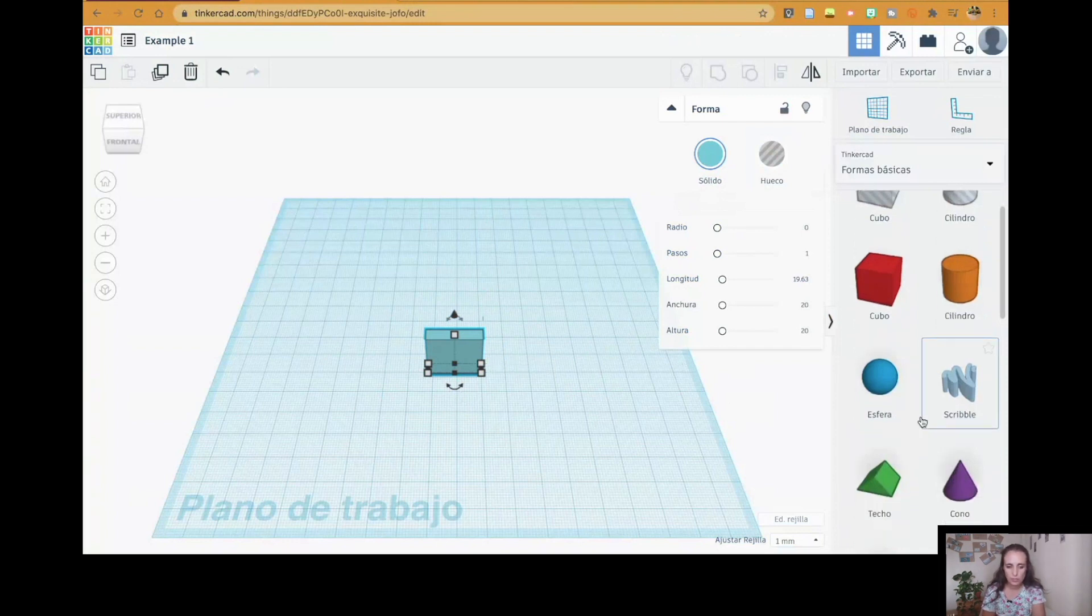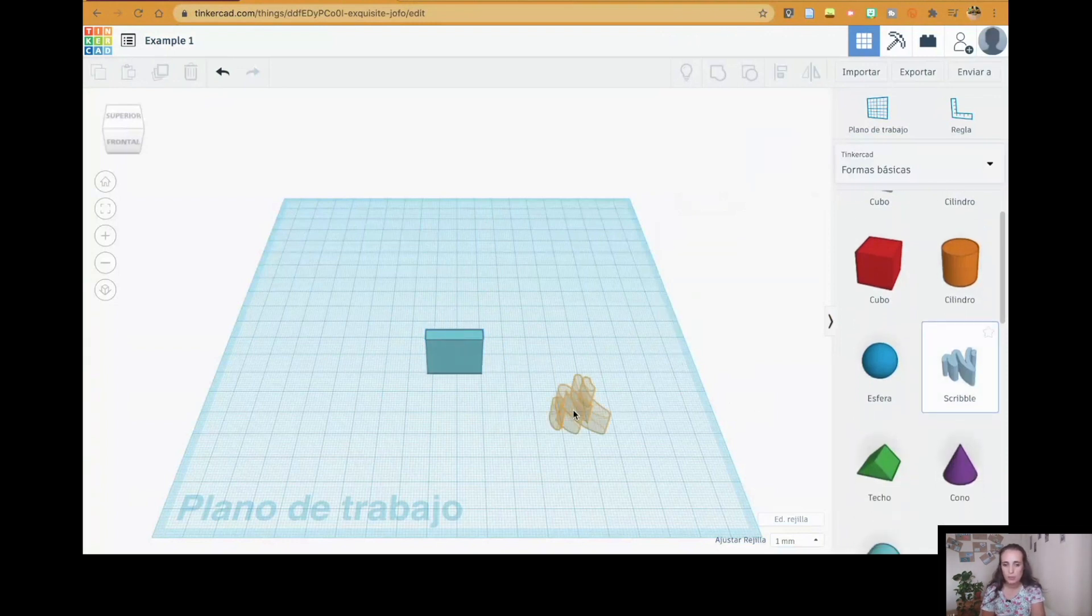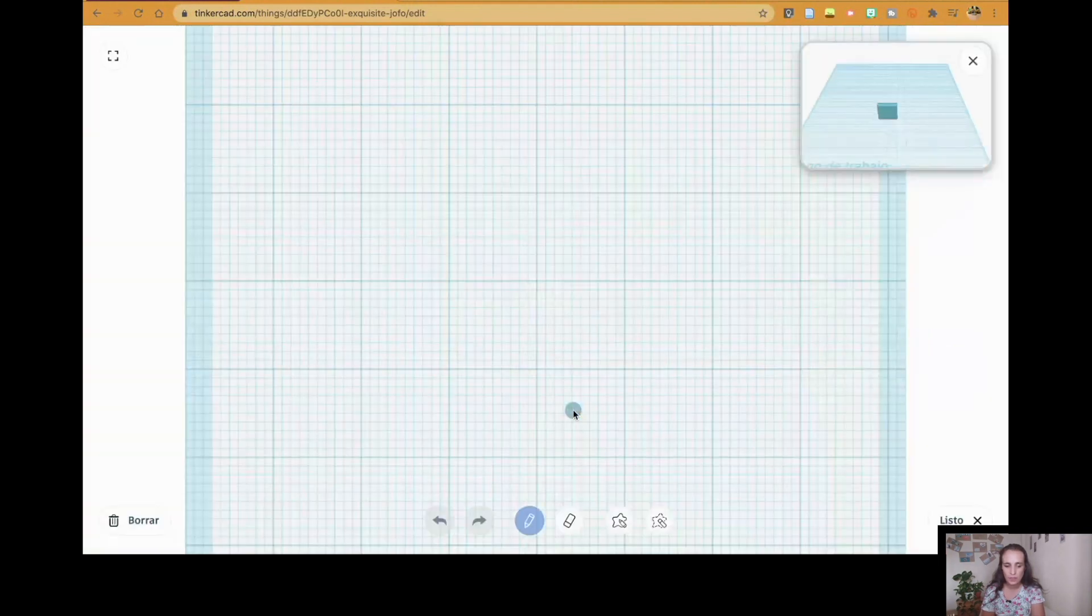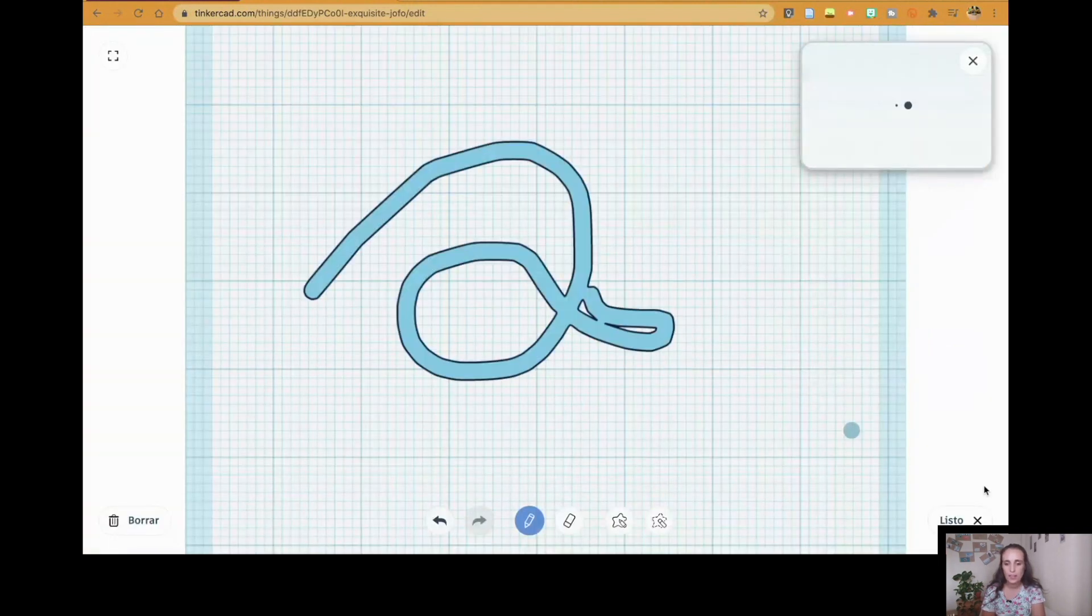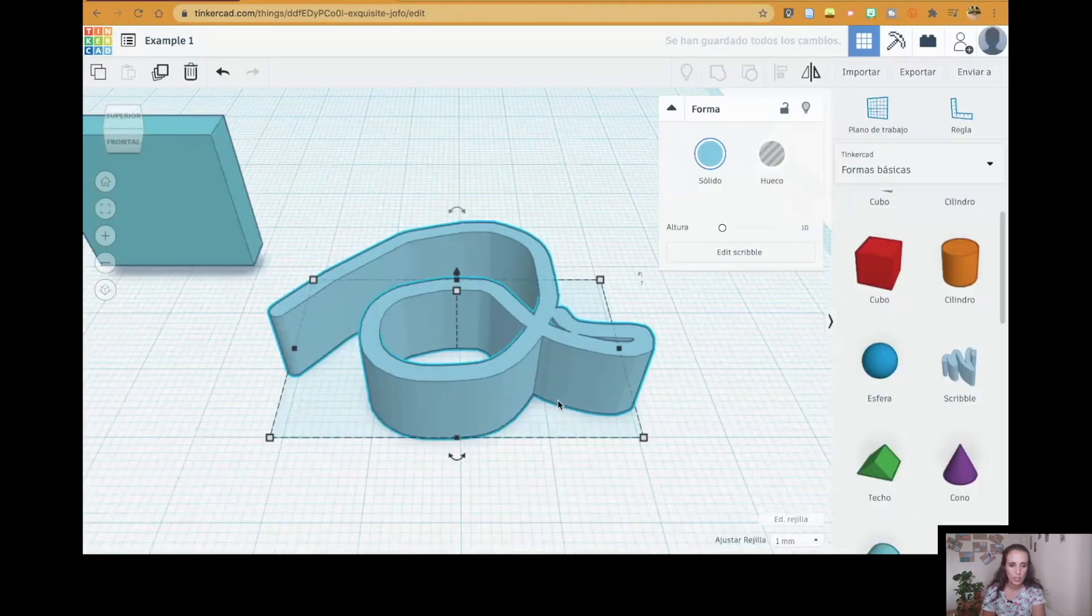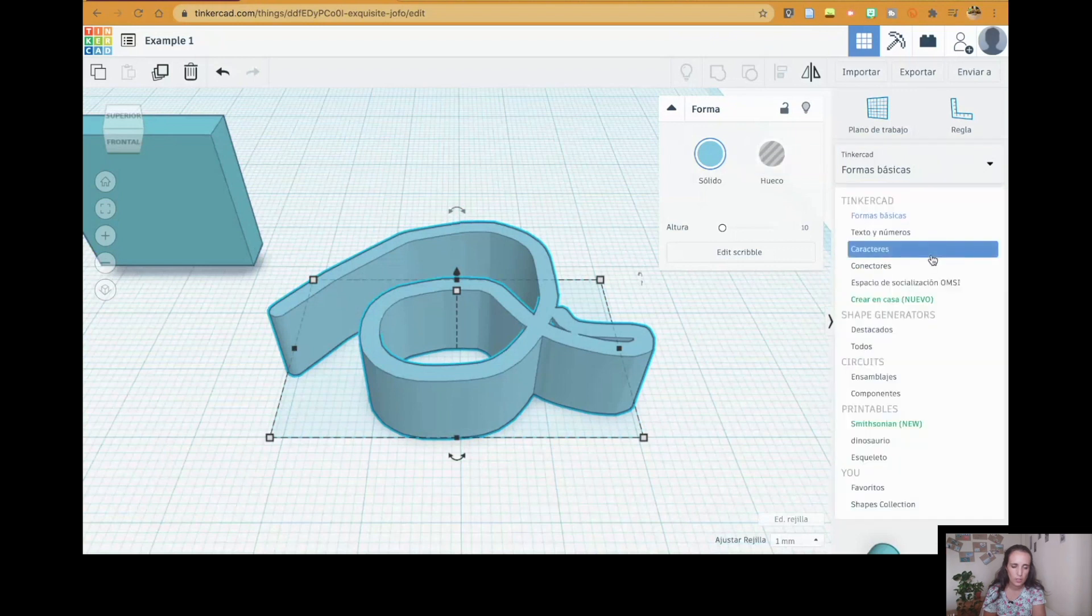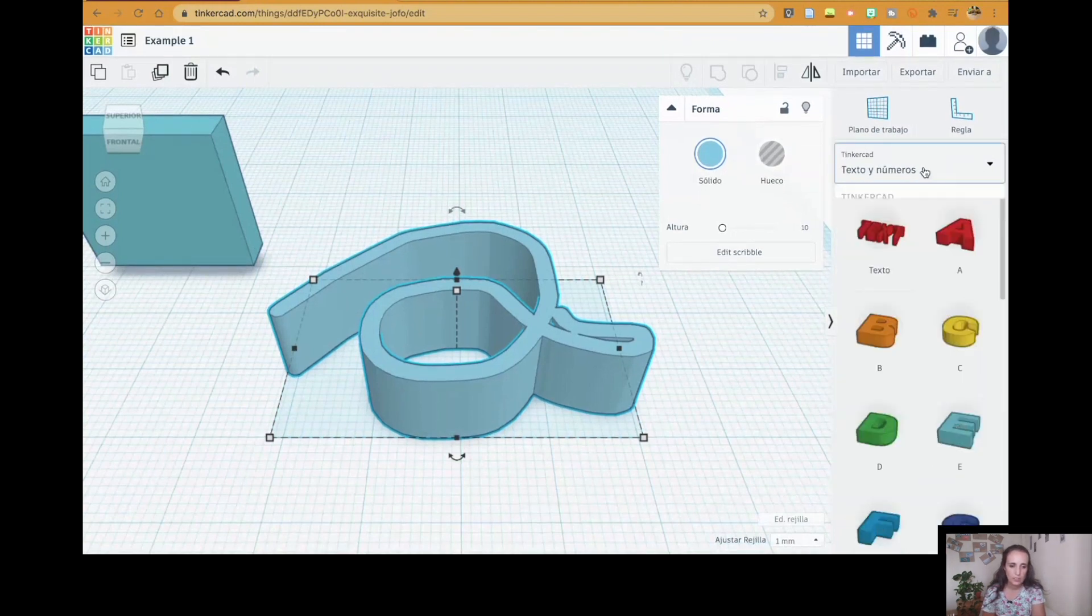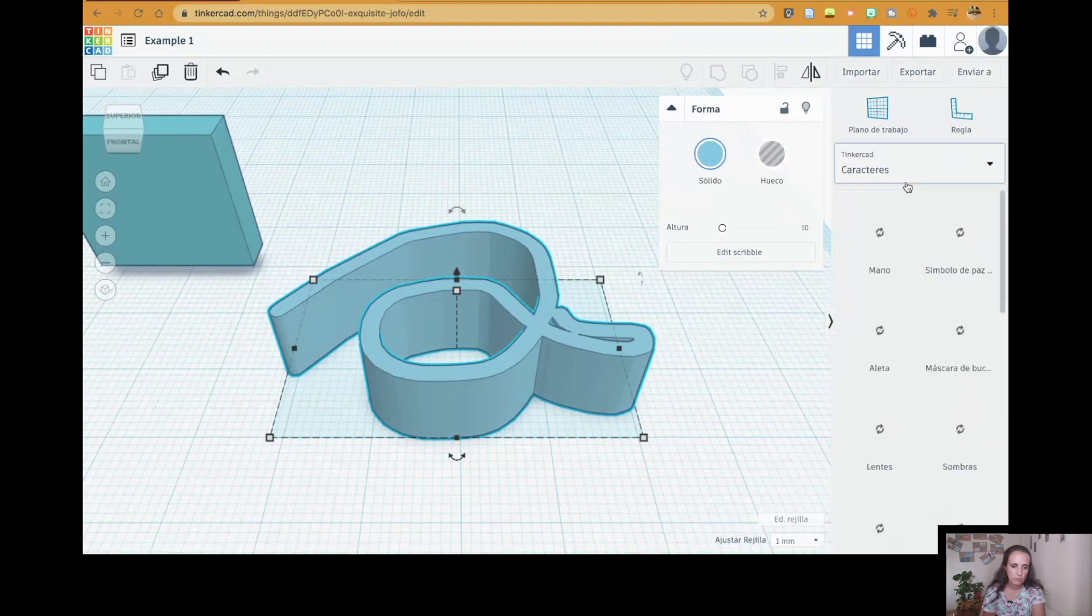Then you have Scribble. In Scribble you can do what you want. You say ready. And you will see the result in three dimensions. And of course this is only basic forms. You can also use text and numbers. So you can write things. Characters. Different shapes. So you can create anything you want with this.